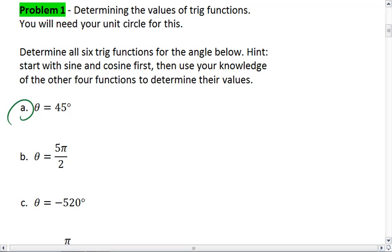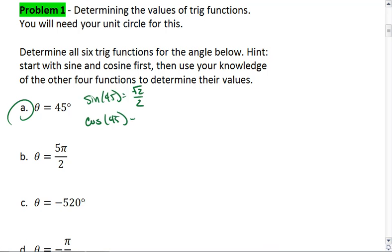Alright, so going back to our notes, we find that sine of 45 is root 2 over 2, which makes cosine of 45 root 2 over 2. Tangent of 45, which is sine over cosine, reduces down to 1, because sine and cosine have the same values.